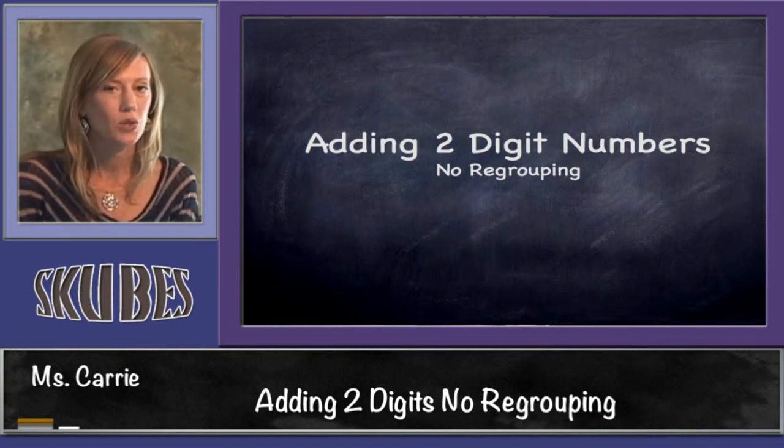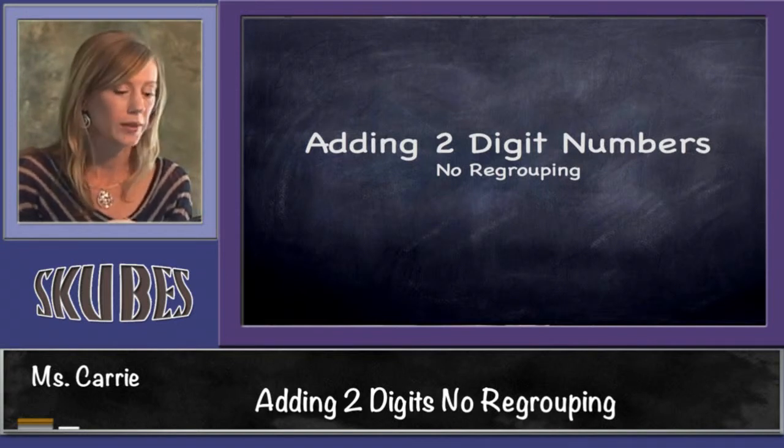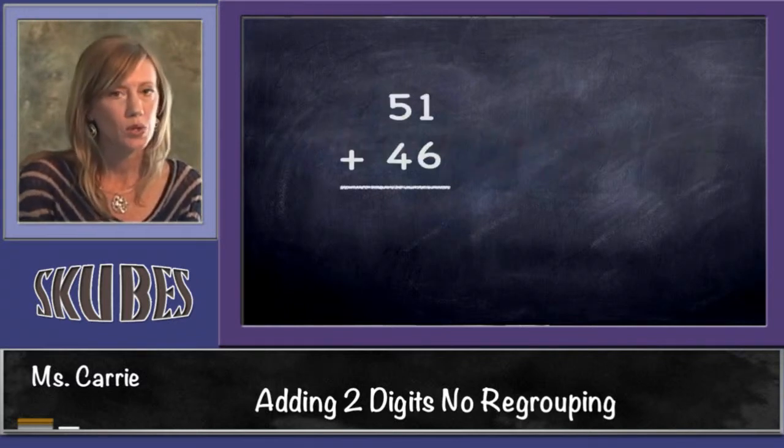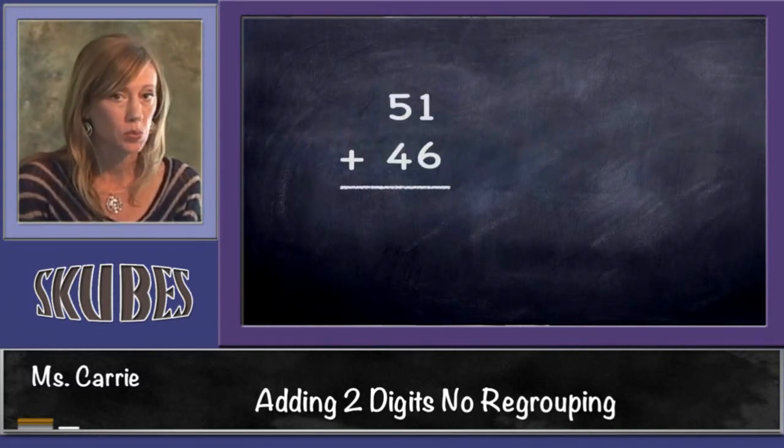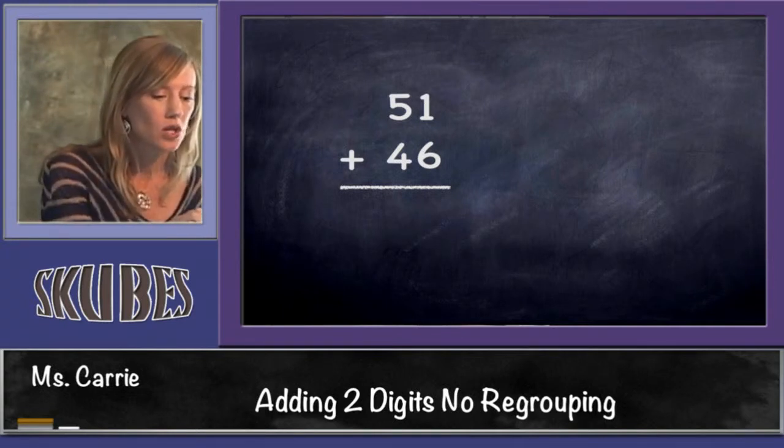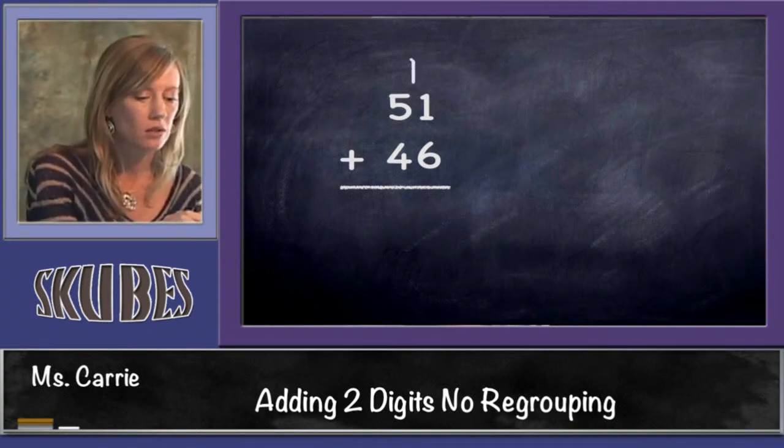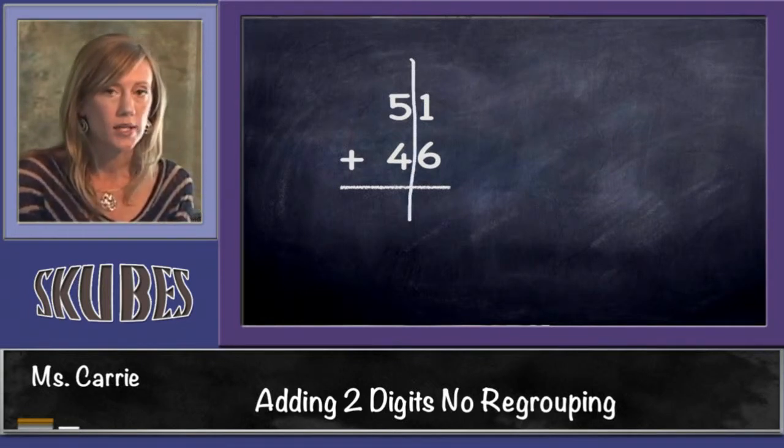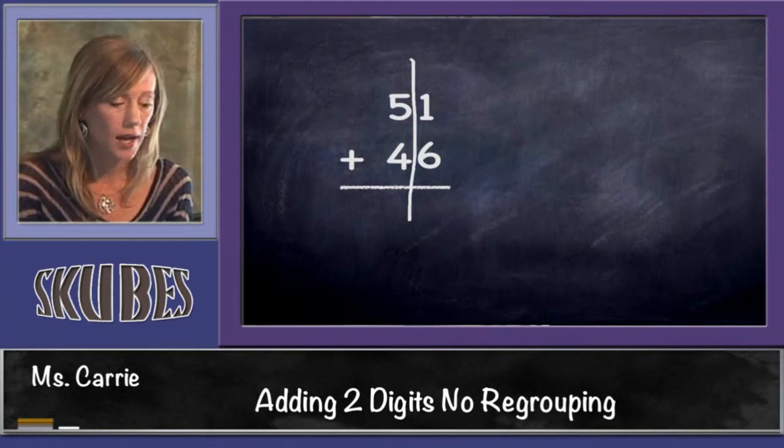Today's lesson is on adding two-digit numbers with no regrouping. When we add two-digit numbers, we need to look in the ones place first. We always start there. I'm going to draw a line down the middle to remember that. We want to start in the ones place, which is on the right-hand side.